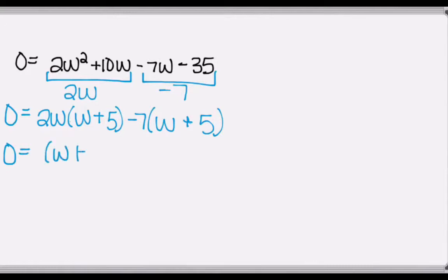And now since they both have a W plus 5 in common, that becomes one of our factors. The other factor is the remaining terms, the GCFs that we factored out, 2W minus 7.